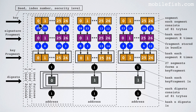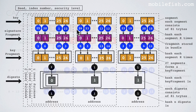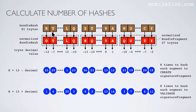These values represent the number of times each segment needs to be hashed. This segment needs to be hashed 25 times, this segment needs to be hashed 20 times, etc. Let's assume this is our bundle hash with a total size of 81 trits. This is a block of 27 trits, this is another block of 27 trits, and this is another block of 27 trits.